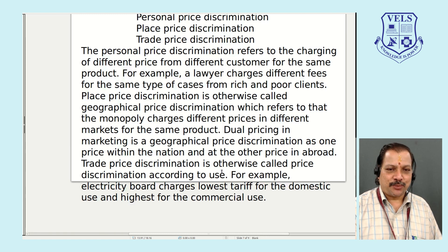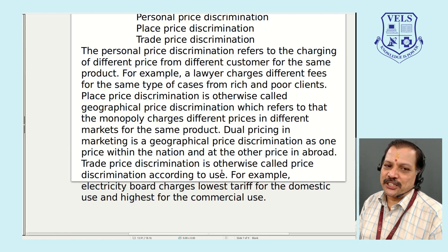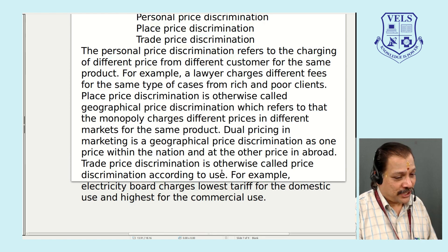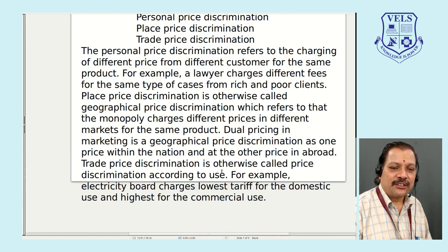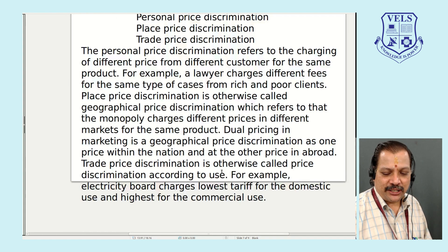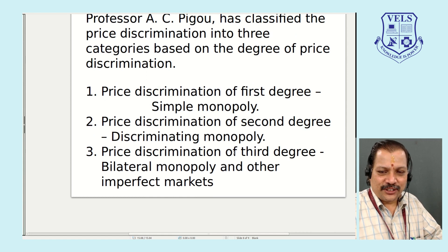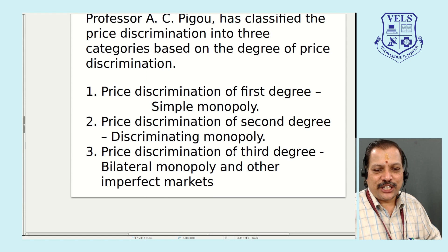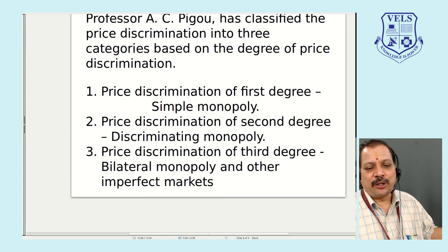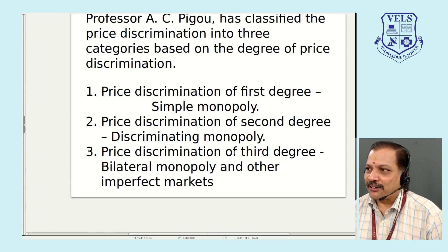There are three types of price discrimination: personal price discrimination, place price discrimination, and trade price discrimination. There are also three degrees of price discrimination given by A.C. Pigou: first degree is simple monopoly, second degree is discriminating monopoly, and third degree is bilateral monopoly.